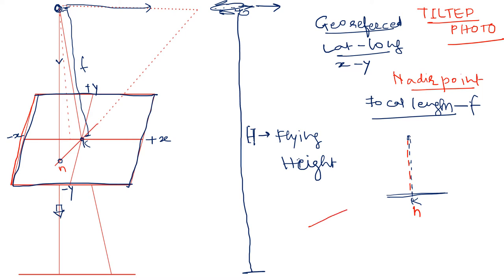In the case of a tilted photograph, the point where the plumb line meets the photograph plane is denoted as N and is called the nadir point. If it is exactly a vertical photograph, K and N are at the same location. But in a tilted photograph, my principal point K and the nadir point N are at different locations. This plumb line continued to the bottom falls on the ground, and that point is called the ground nadir point, also denoted as N.